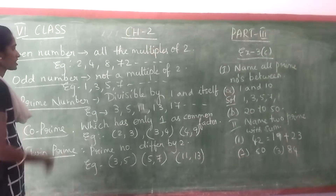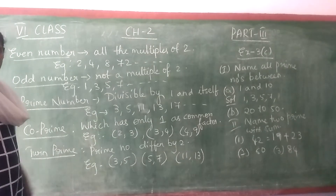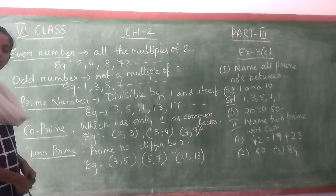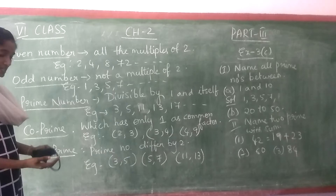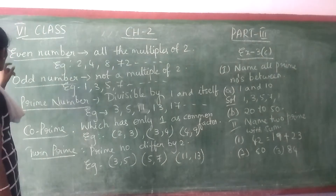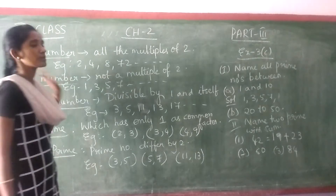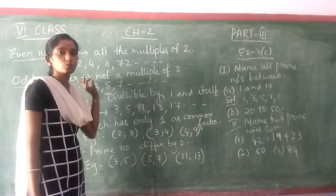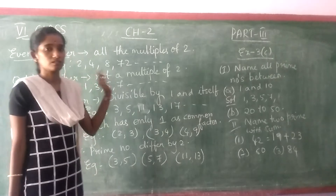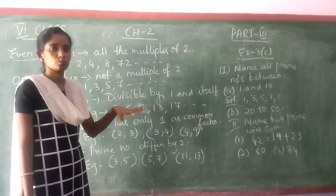Good morning. Today we are going to learn a few definitions based on numbers — different types of numbers. First, see the even number. Even numbers are numbers which are the multiples of 2.